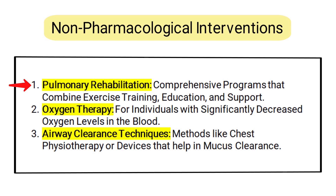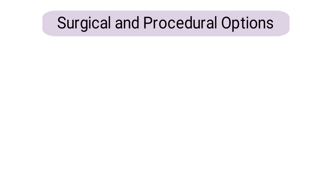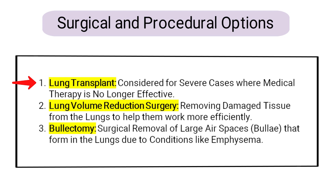Non-pharmacological interventions include pulmonary rehabilitation, which is a comprehensive program that combines exercise training, education, and support; oxygen therapy, helpful for individuals with significantly decreased oxygen levels in the blood; and airway clearance techniques, which involve methods like chest physiotherapy or devices that help with mucus clearance. For more severe cases, surgical and procedural options include lung transplant, lung volume reduction surgery — which involves removing damaged tissue to help the lungs work more efficiently — and bullectomy, the surgical removal of large air spaces that form in the lungs due to conditions like emphysema.